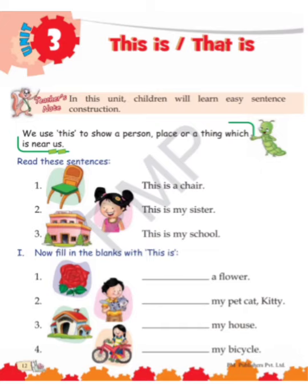Exercise number one: fill in the blanks with 'this is'. First one — what is it drawn? Yes, it is a flower. So we will write 'This is a flower.' There's only one flower, so we write 'This is a flower'.